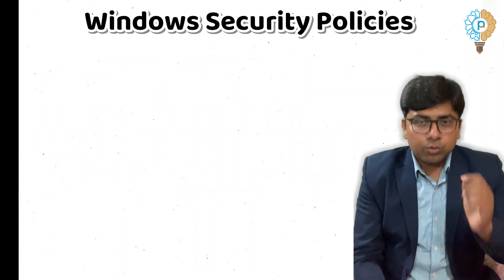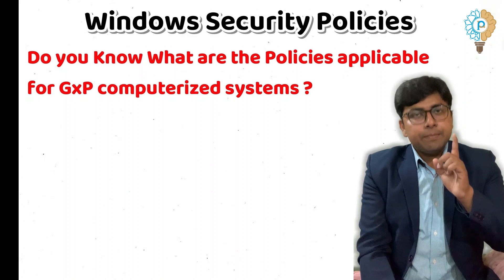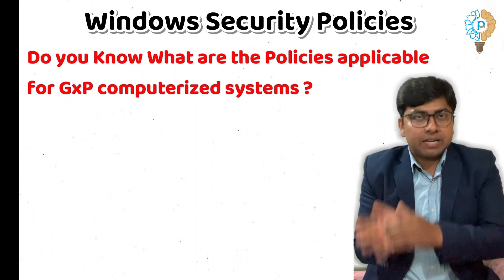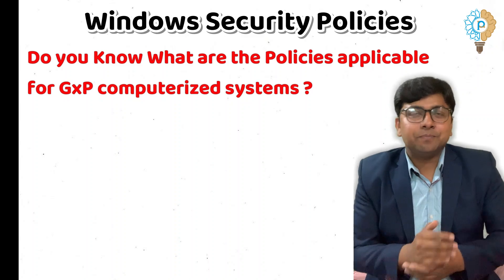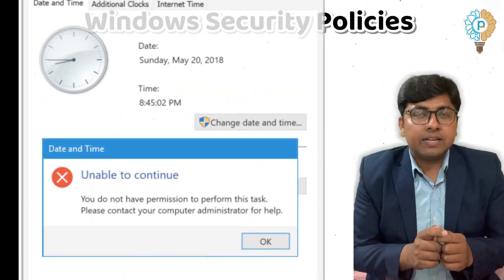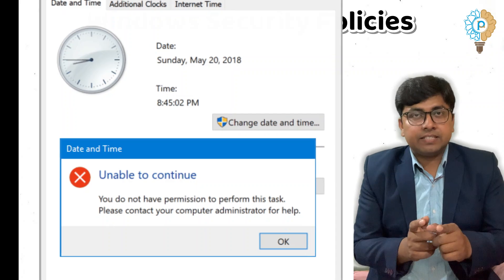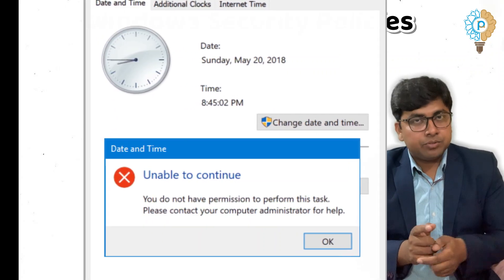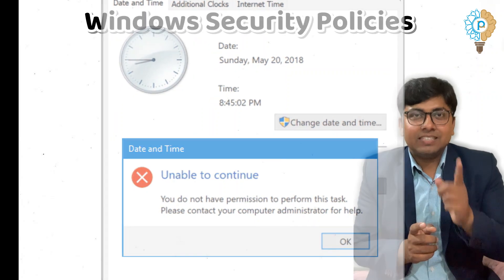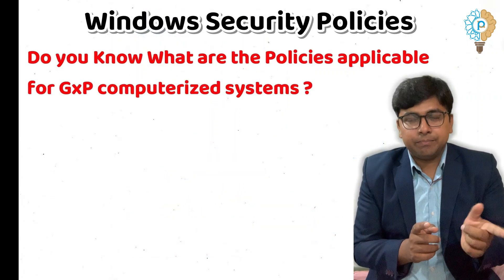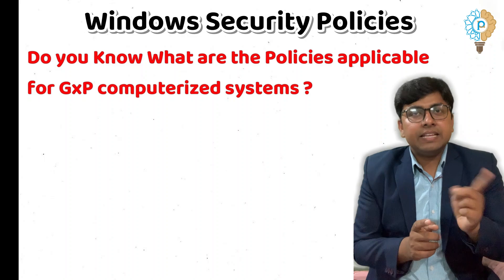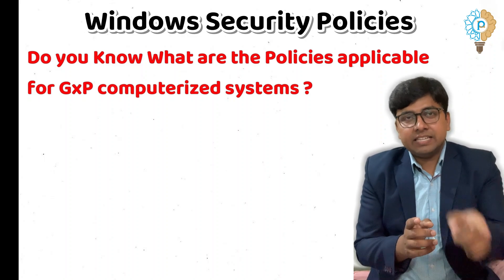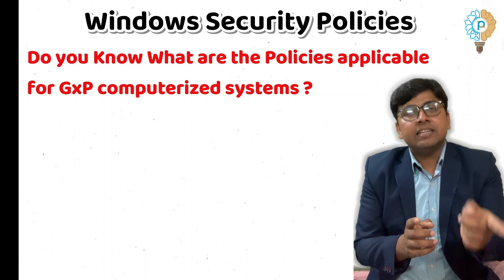Now, what are the important parts of Windows security policy that you should have in your GXP computerized system? First, domain users shall not have access to change the date and time of any GXP computerized system, because if any user is able to change the date and time, it will automatically impact the generation of data as well as the integrity of the system.